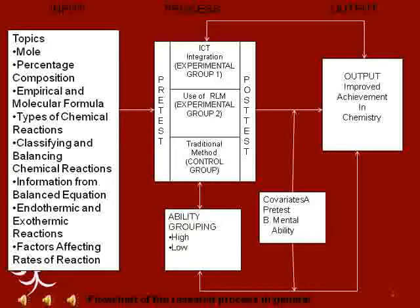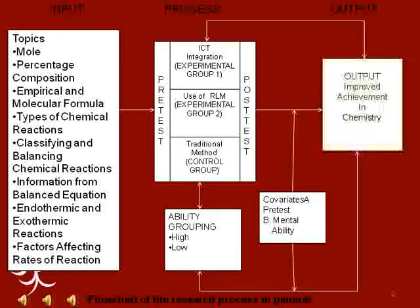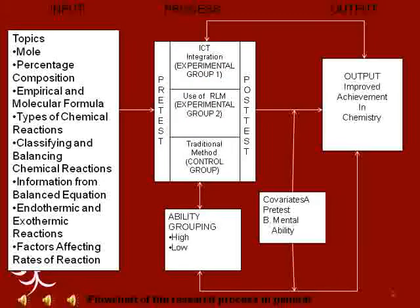This is the flowchart of the research process. This will describe and explain what this study is all about. This study examines the effects of the three methods of teaching on the achievement of students in chemistry. The three methods of teaching are the ICT,